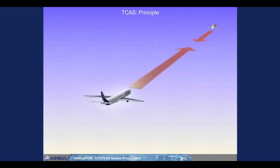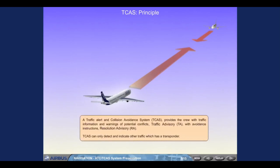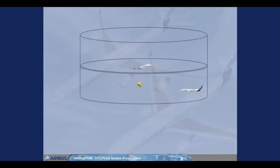A Traffic Alert and Collision Avoidance System (TCAS) provides the crew with traffic information and warnings of potential conflicts: traffic advisory (TA) with avoidance instructions, and resolution advisory (RA). TCAS can only detect and indicate other traffic which has a transponder. The TCAS detects intruders flying within a maximum range of 100 nautical miles, and within a maximum altitude of 9,900 feet above and below the aircraft.